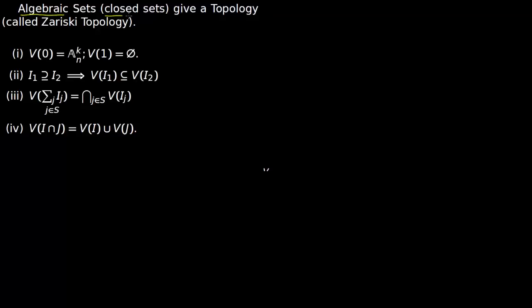Algebraic sets are the closed sets and they give a topology called the Zariski topology. We are going to define topology in terms of closed sets. In general, topology is defined in terms of open sets, but the complement of closed sets gives you open sets. The entire space is a closed set because it comes from the equation 0 = 0. The null set is also a closed set because the equation 1 = 0 has no solution.